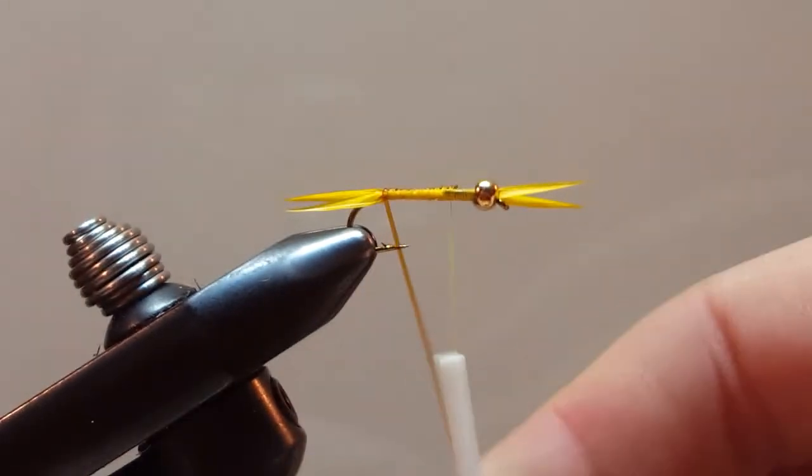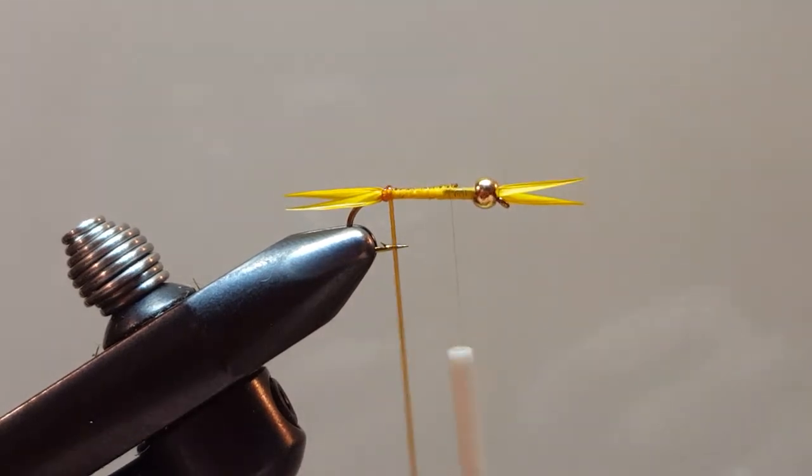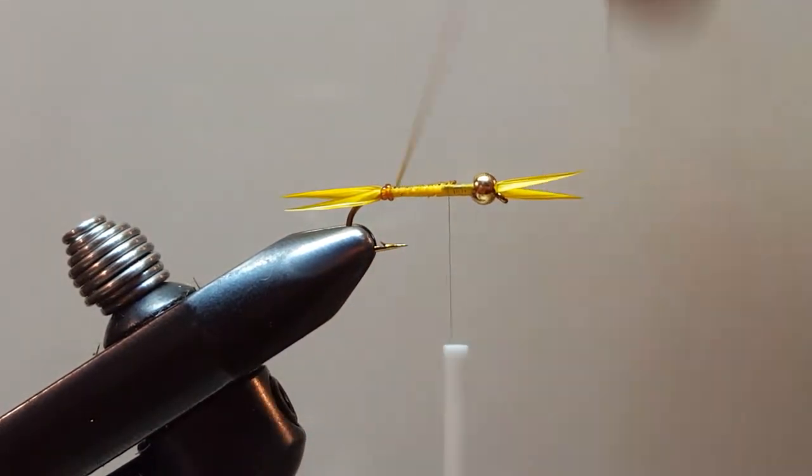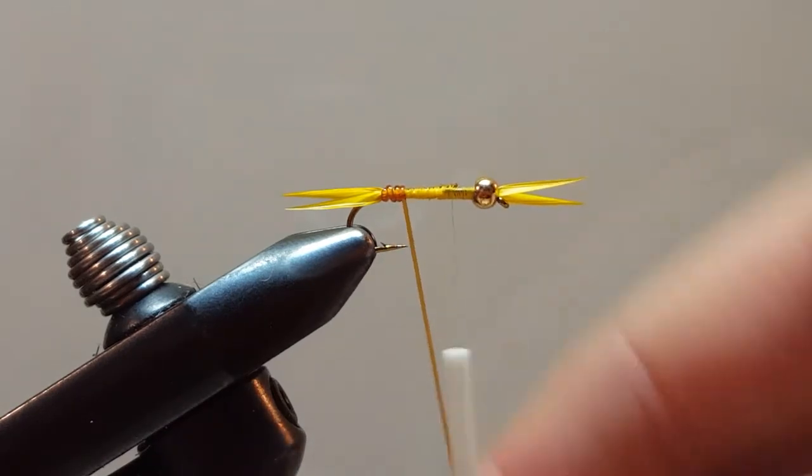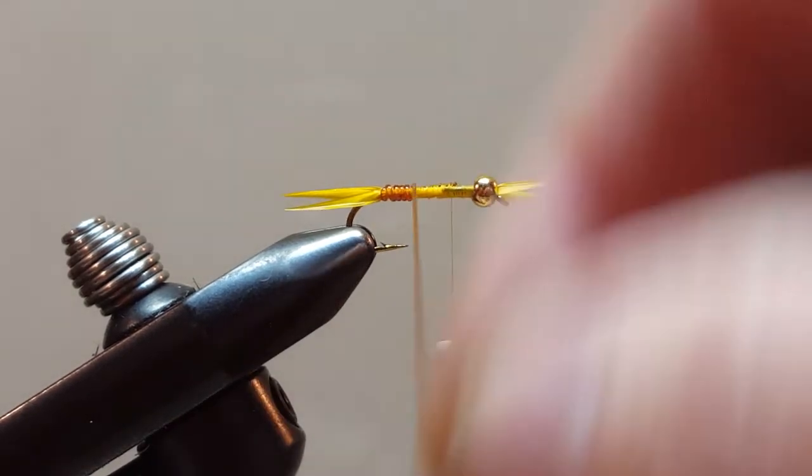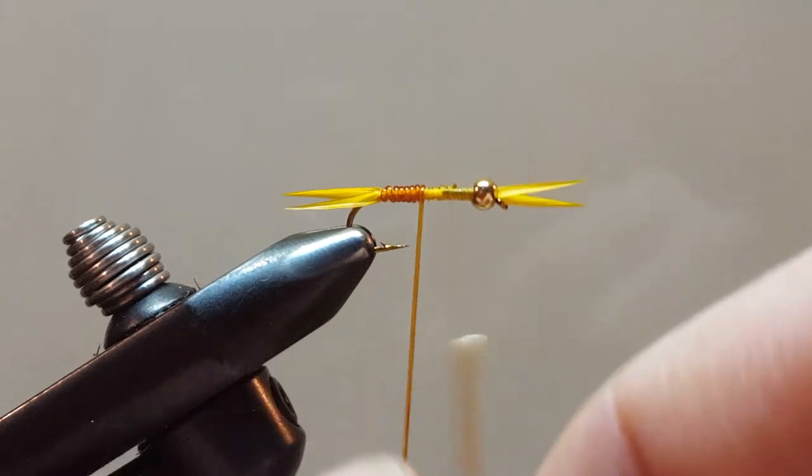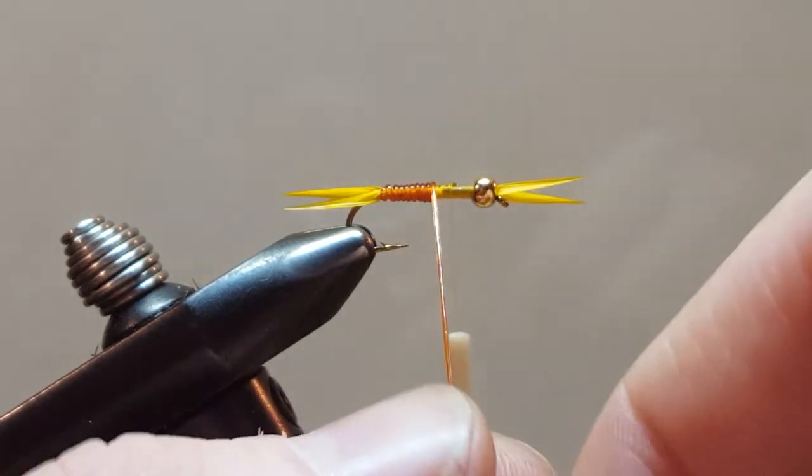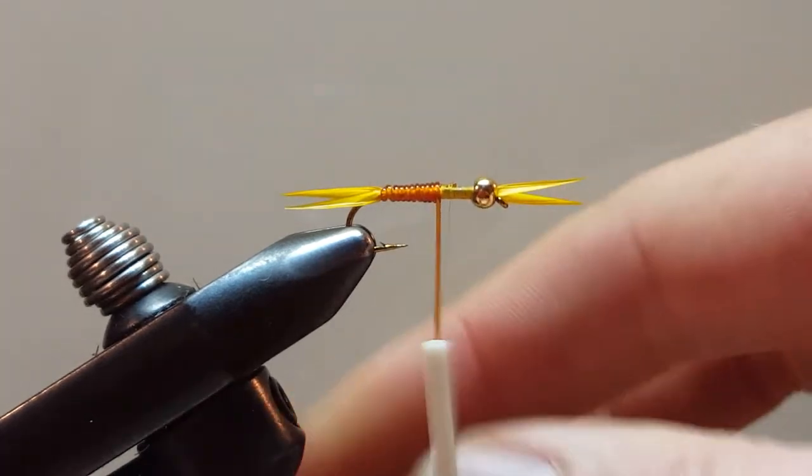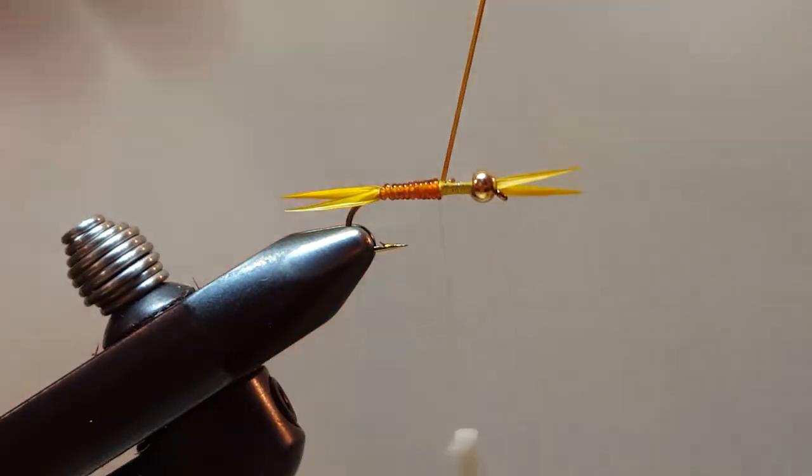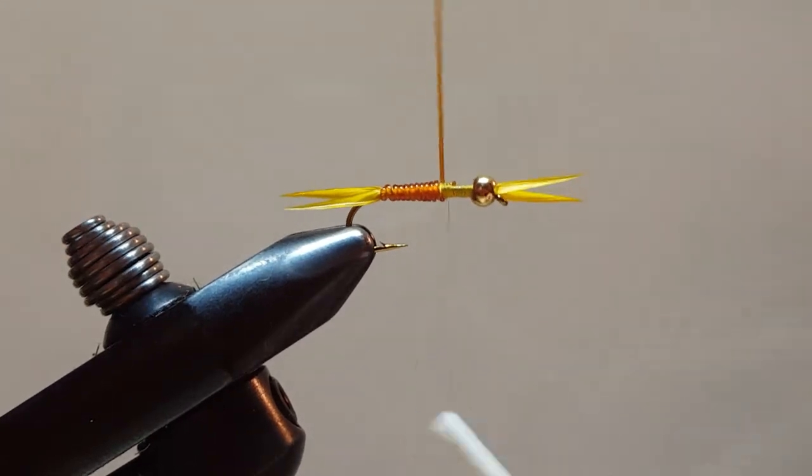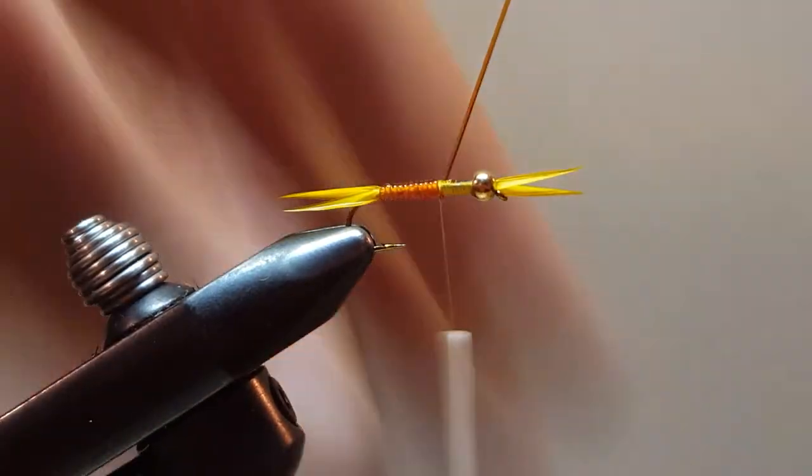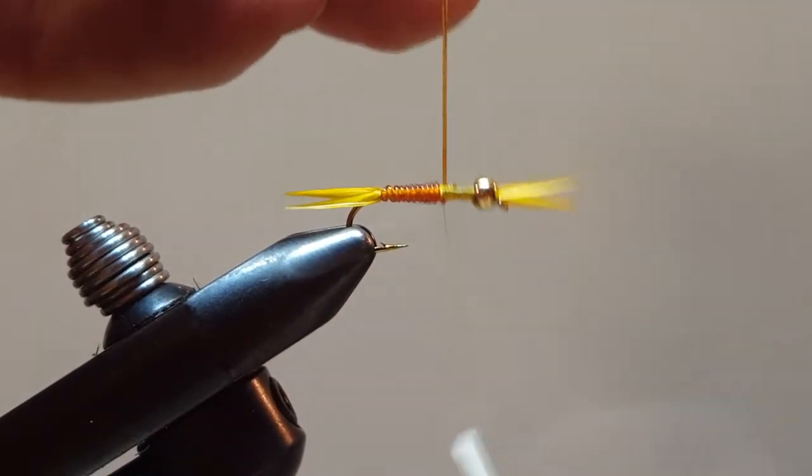Excellent. Taking my thread forward, we'll palmer on the ribbing. And when I start off, I'm giving this a real nice tight stretch. And as I work forward, I will relax the stretch. And this will help with the taper. I'm going to start to relax the stretch a little bit. Letting it lay down just a little heavier. And we'll secure this in. I'm going to give this a few extra wraps. Locking it down. Because it's fully loaded with tension.